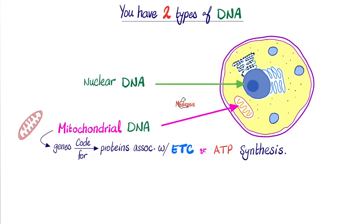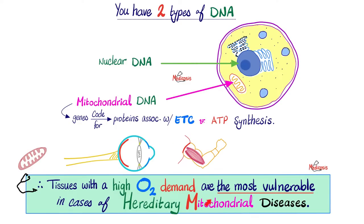Recall that normally the mitochondrial DNA contains genes, and genes code for proteins. These proteins, coming from the mitochondrial DNA, are associated with the electron transport chain and ATP production — all kinds of energy. And that's why in patients with hereditary mitochondrial diseases, the organs that will suffer the most are the most active and in need of ATP: your optic nerve, your eyes, your muscles, your heart, your brain, etc.